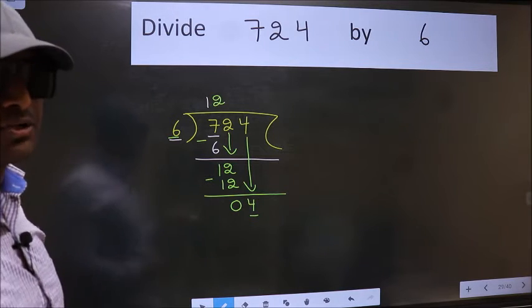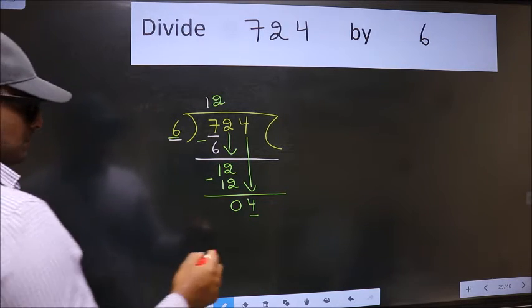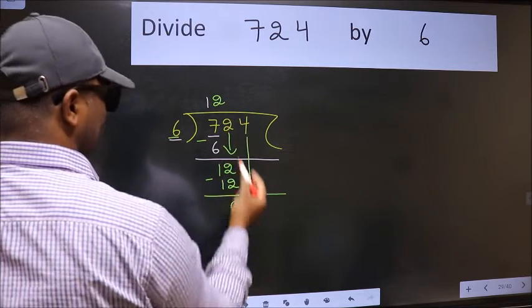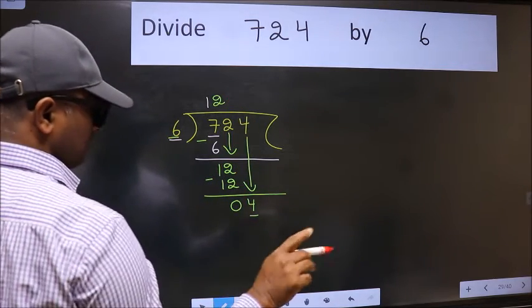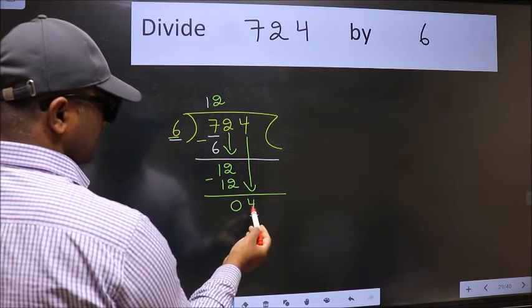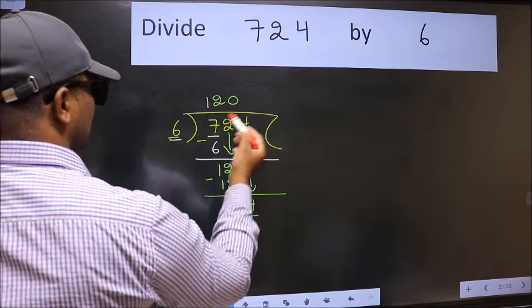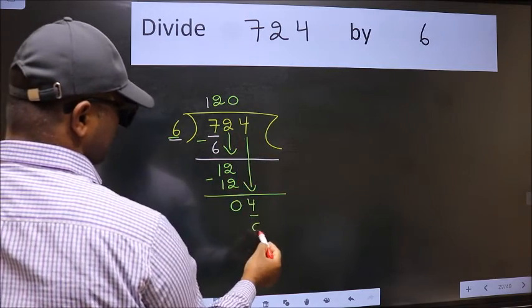Instead of that, what you should think of doing is which number should we take here. If I take 1, we will get 6, but 6 is larger than 4. So what we do is we take 0. So, 6 into 0 is 0.